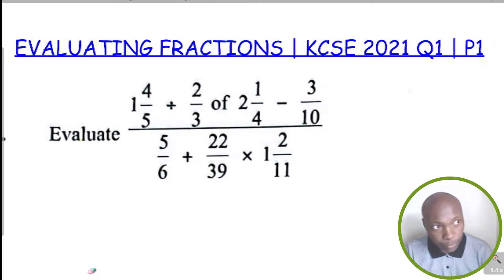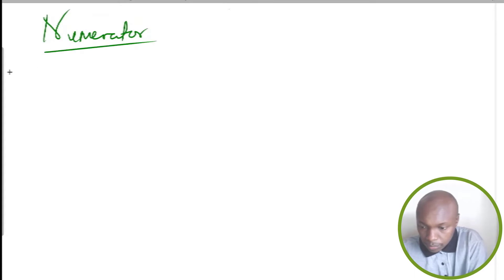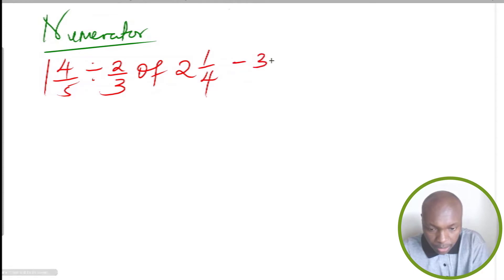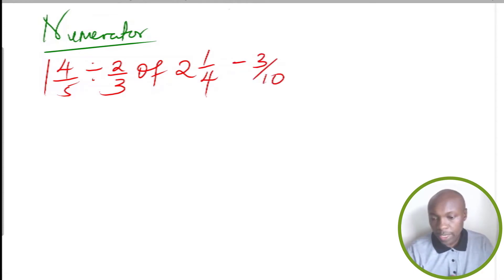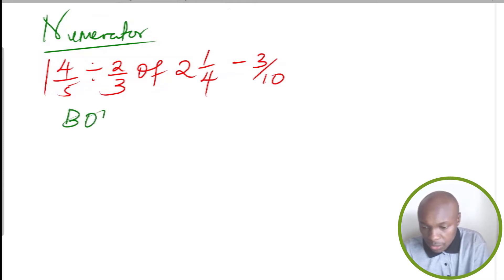Let's go straight to the numerator. The numerator is: 1 and 4 over 5 divided by 2 thirds of 2 and a quarter, subtract 3 over 10. We have three different operations: division, 'of', and subtraction. In such a case, the rule of BODMAS must be applied.